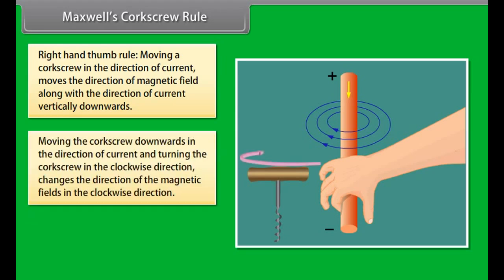then the direction of the magnetic fields is in the clockwise direction. So, when current flows upwards the direction of magnetic field changes and is anti-clockwise.